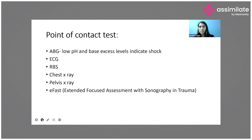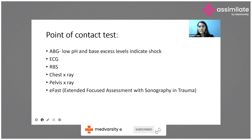ECG can indicate any arrhythmias. RBS can reveal a history of diabetes or hypoglycemia — if the patient's airway seems compromised and RBS shows hypoglycemia, we can administer dextrose to improve sensorium. For chest X-ray, portable chest X-rays are preferred for unstable patients who cannot be moved to radiology, to rule out pneumothorax, hemothorax, tracheal injuries, and other injuries. Pelvic X-rays can also be portable, and if a pelvic fracture is suspected, apply a pelvic binder as early as possible.